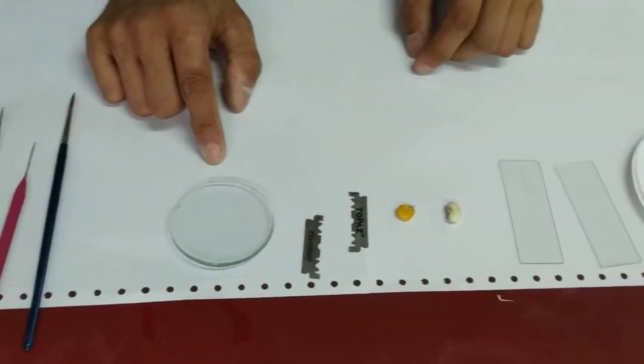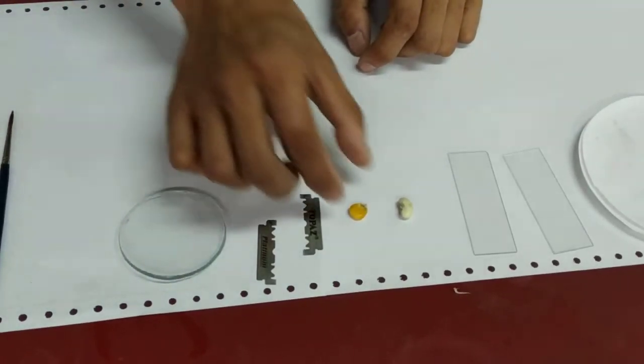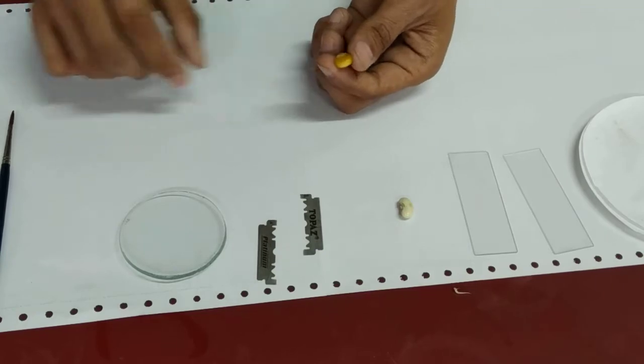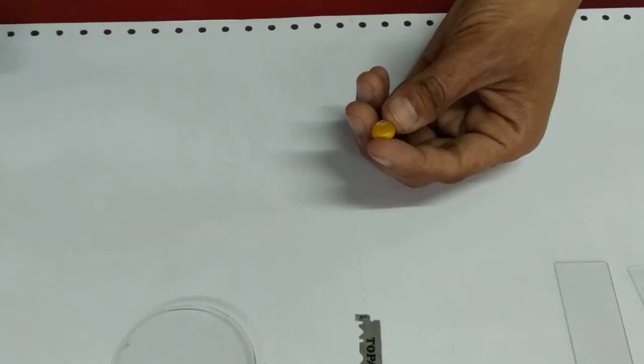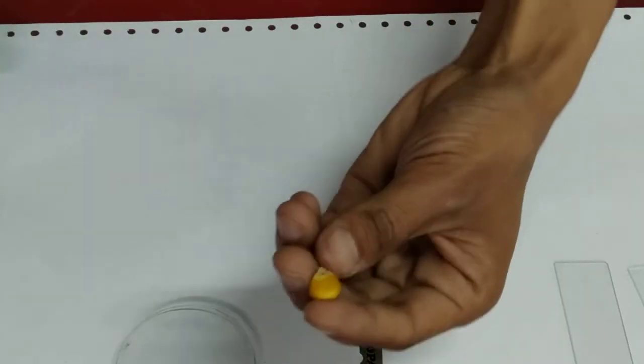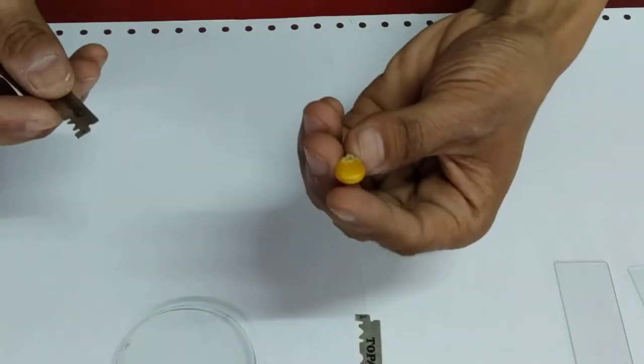Slides and filter paper. So the first thing we are going to do is we are going to cut the longitudinal section of maize seed.